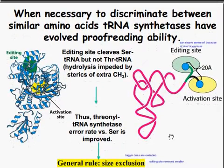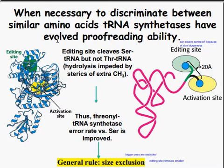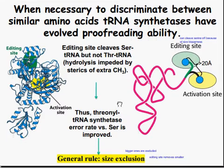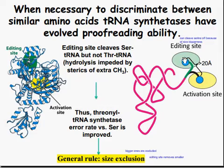When it is necessary to discriminate between similar amino acids, tRNA synthetases have evolved proofreading ability. You have the active site and also an editing site. The editing site cleaves the serine tRNA but not the threonine tRNA — serine versus threonine tRNA hydrolysis is impeded by the sterics of the extra carbon group. The general rule is size exclusion: bigger ones are excluded. The editing site removes anything smaller. If it's proper, it goes out; if not, it goes to the editing site and is removed.